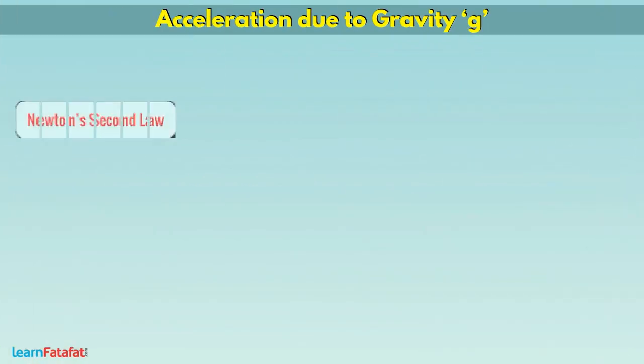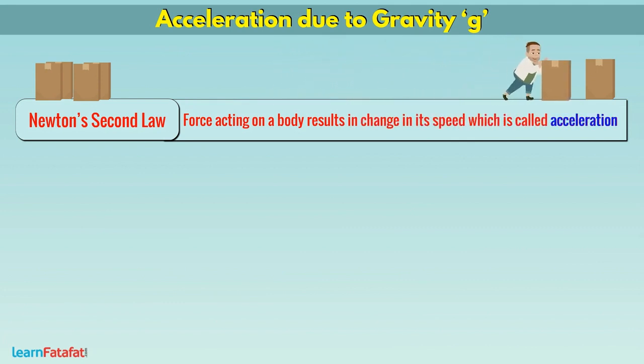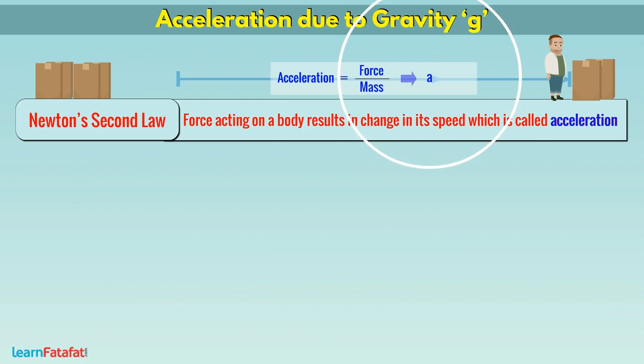According to Newton's second law, the force acting on the body results in a change in its speed, which is called acceleration. This acceleration is given as the force divided by mass of the body: A is equal to F divided by M.